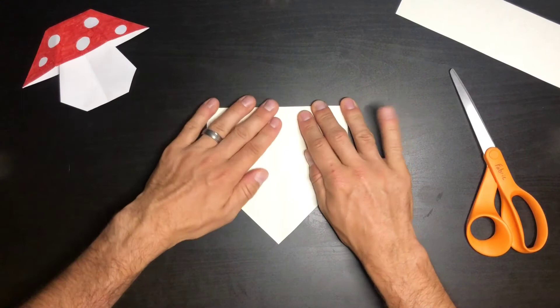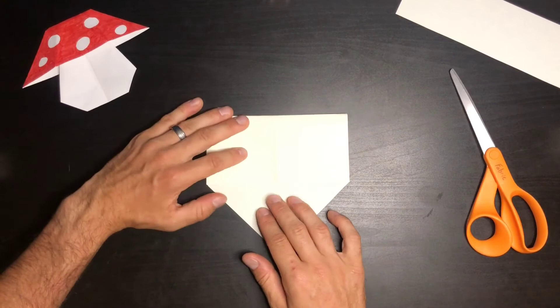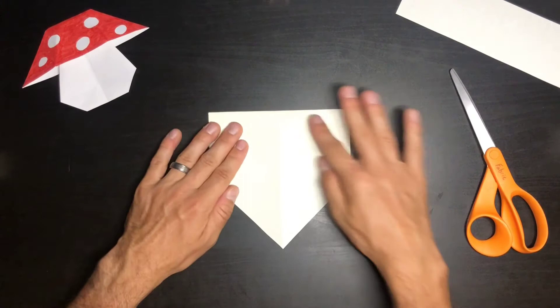Now you see how this kind of opens up in this direction. We're going to call this the front side. What we're going to do is turn it over and go to the back side. So now we see one flat piece of paper.